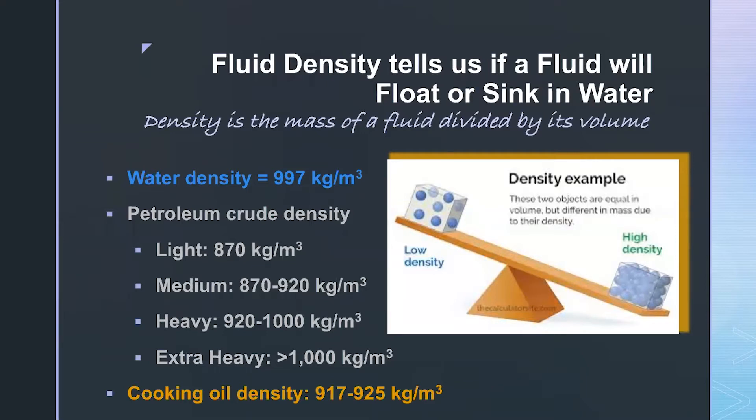And in general, density is the mass of the fluid divided by the volume that it occupies. So when we look at something like water, it has a density of 997 kilograms per cubic meter. Now, when we look at crude oil, some of the crudes are light, medium, heavy, or extra heavy. And you could see that their densities are different. Some of them are smaller than that of water, and some of them are greater than that of water. So when you have a heavy or an extra heavy crude oil, it's going to sink to the bottom. When you have a light or a medium crude, then it's going to float on top.